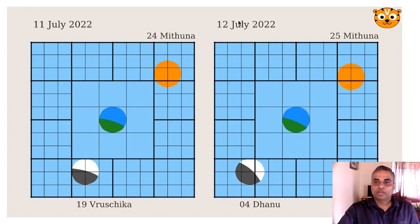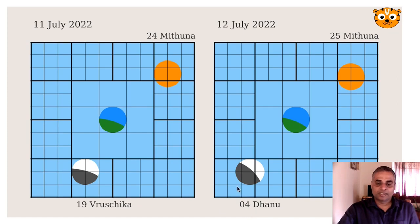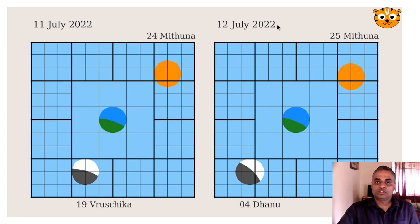On 12th July 2022, the Sun has moved further to 25 Mithuna, and the Moon has moved to a new constellation — Sagittarius, called Dhanu — at 4 degrees, as per the Panchanga at India-specific time. The observer on Earth can now see approximately the complete Moon. It is approaching full moon.